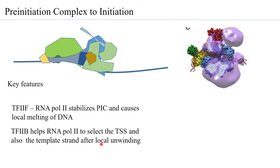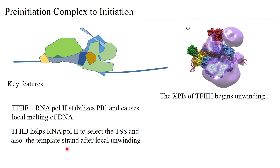The local unwinding by TF2F gives rise to two single strands, one of which will act as the template strand. TF2B helps enable RNA polymerase 2 to hold the template strand within the core active cleft, formed by the RPB1 and RPB2 subunits of RNA polymerase 2.